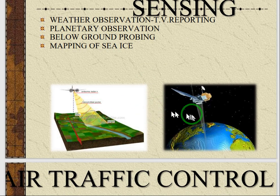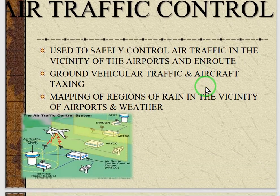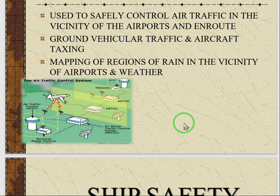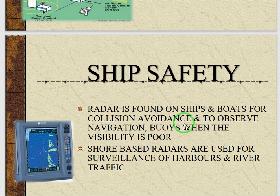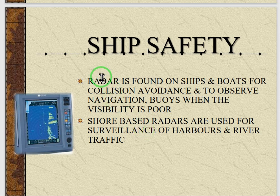Pictures are also given showing the satellite system — that is the observation of planetary bodies or identification of sites on Earth. In air traffic control, radar is used to safely control air traffic in the vicinity of airports, ground vehicular traffic, aircraft taxiing, and mapping of rain regions near airports. For ship safety, radar is found on ships and boats for collision avoidance and to observe navigation when visibility is poor. Shore-based radars are used for surveillance of harbors and harbor traffic.